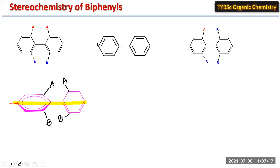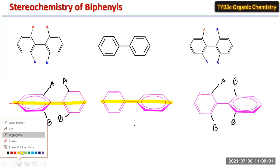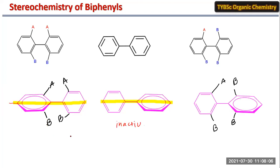For the unsubstituted case, if you pass a plane of symmetry, both rings possess a plane of symmetry, making it optically inactive. If none of the rings possess symmetry, the molecule is optically active. For the third structure, one ring possesses symmetry, so the whole molecule is optically inactive.